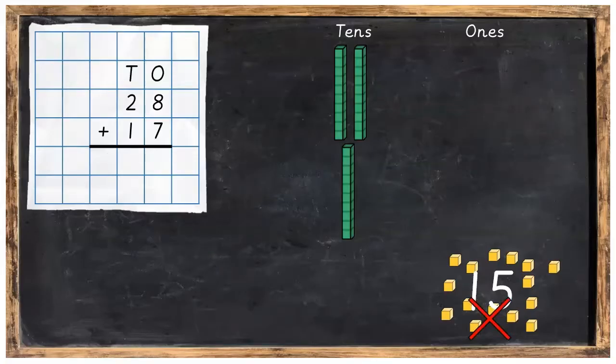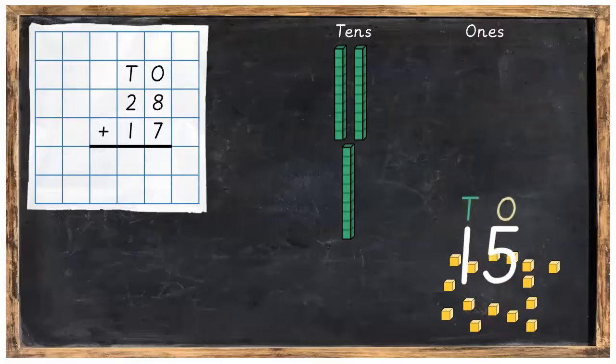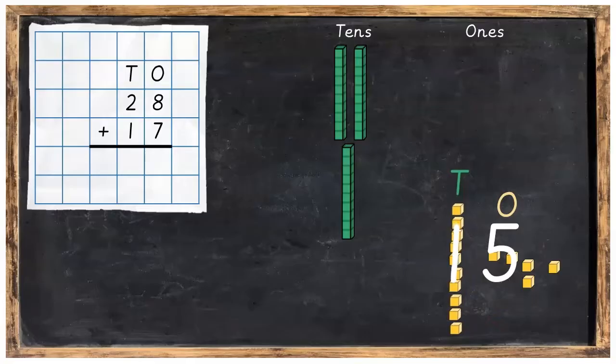But there's a problem here because 15 ones won't fit into the ones column. So what we're going to have to do is bundle it into one 10 and then our 5 ones.